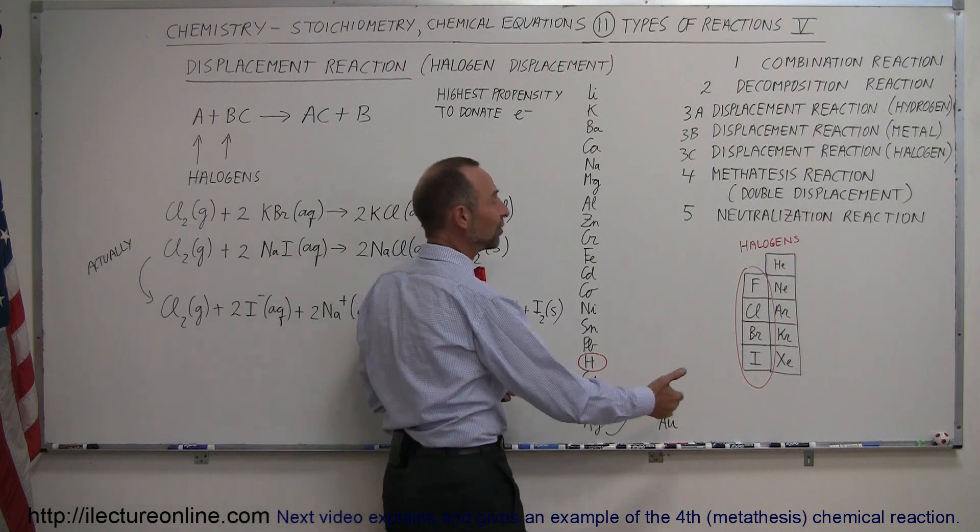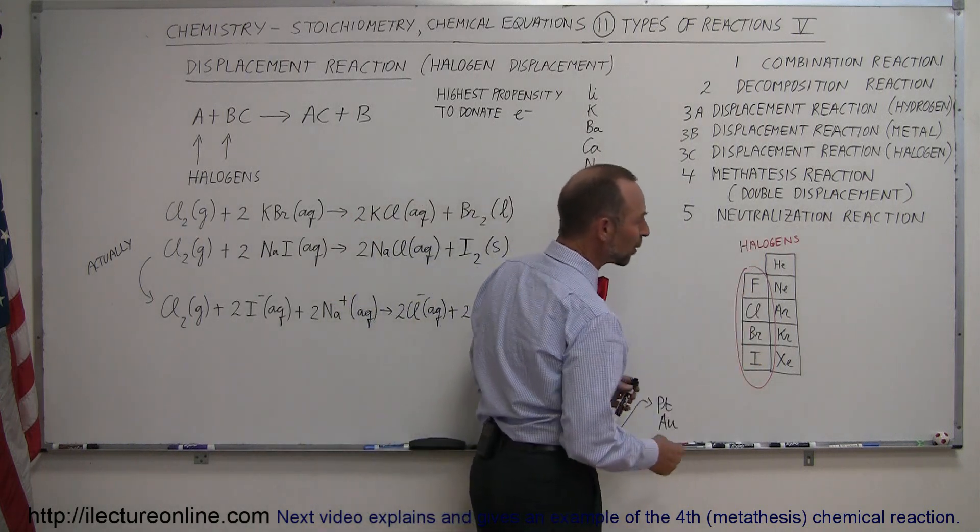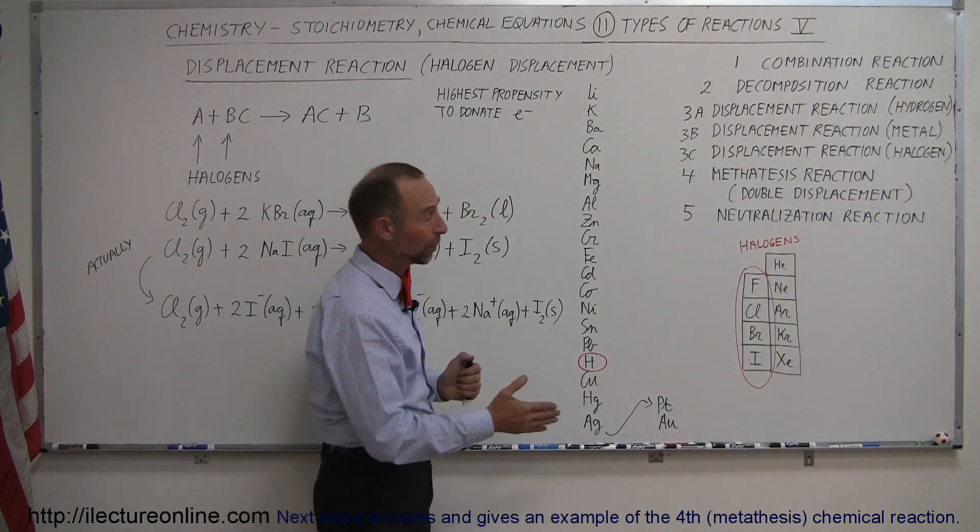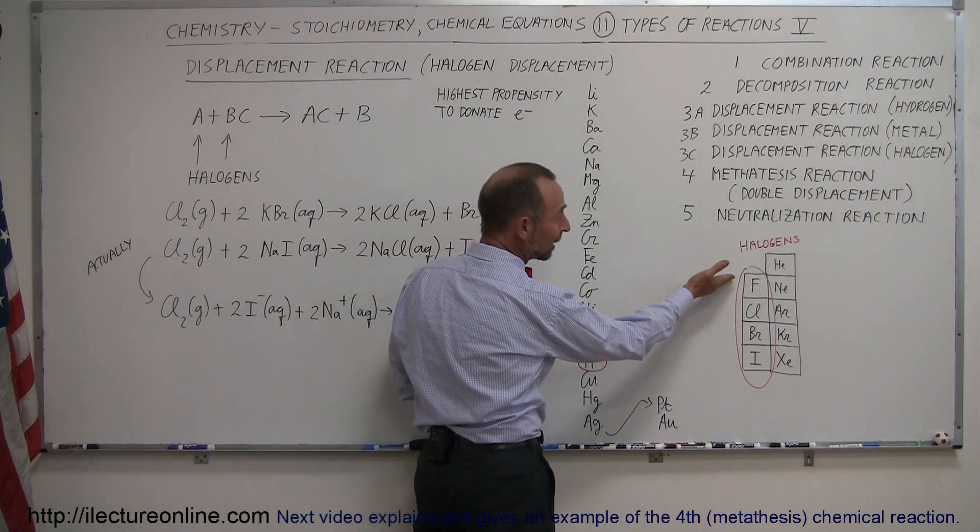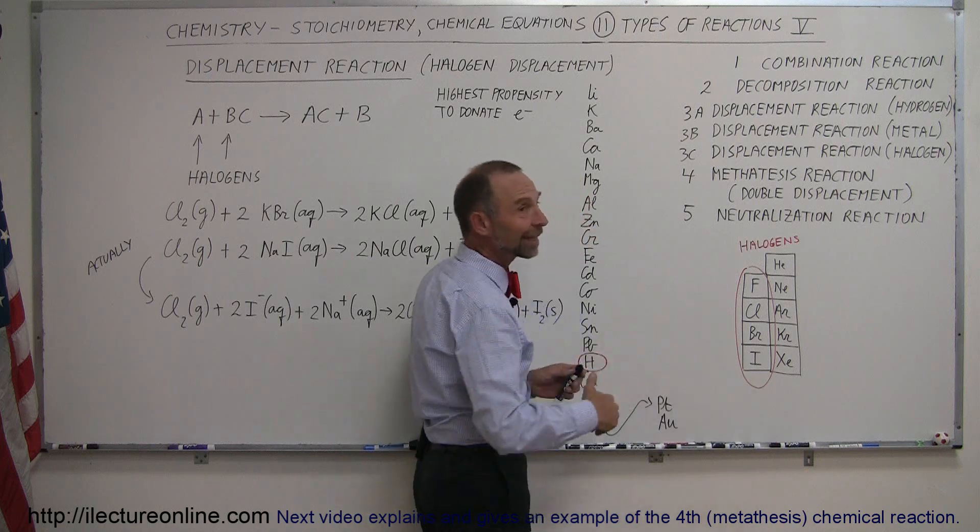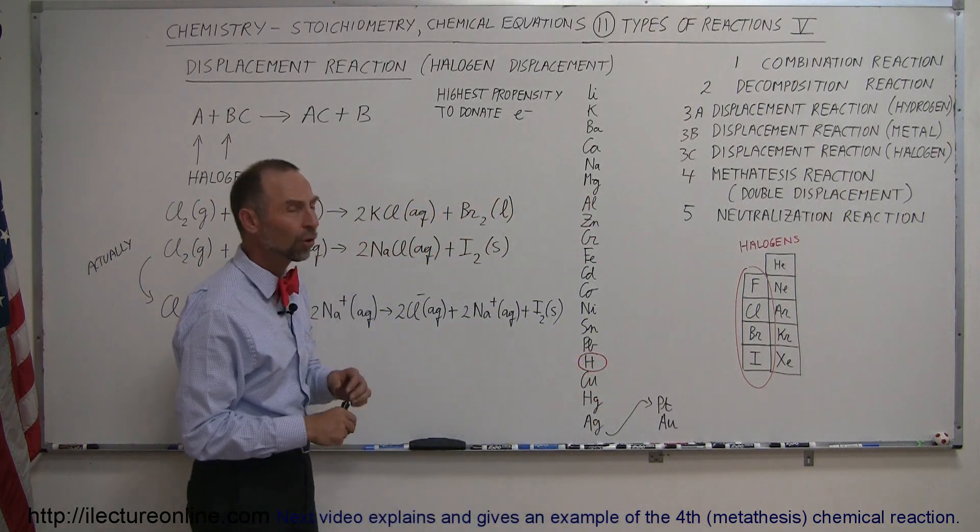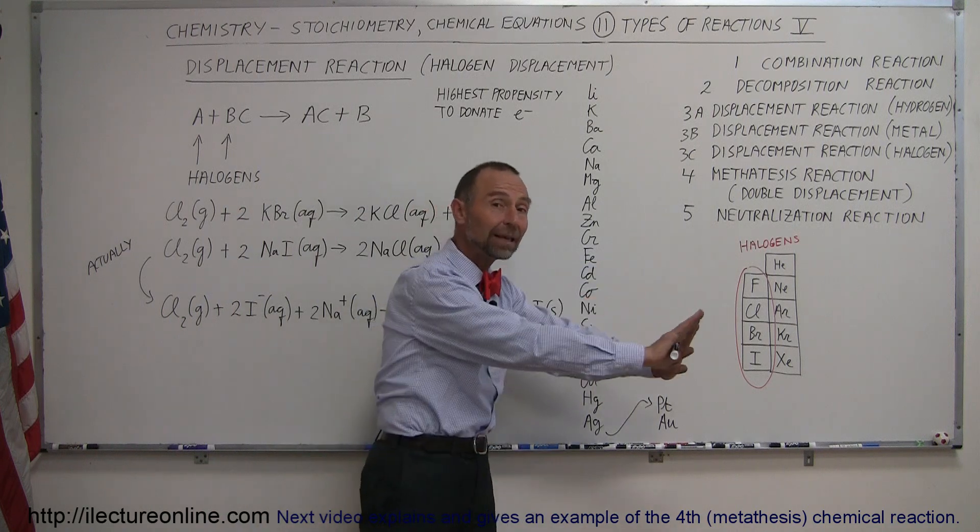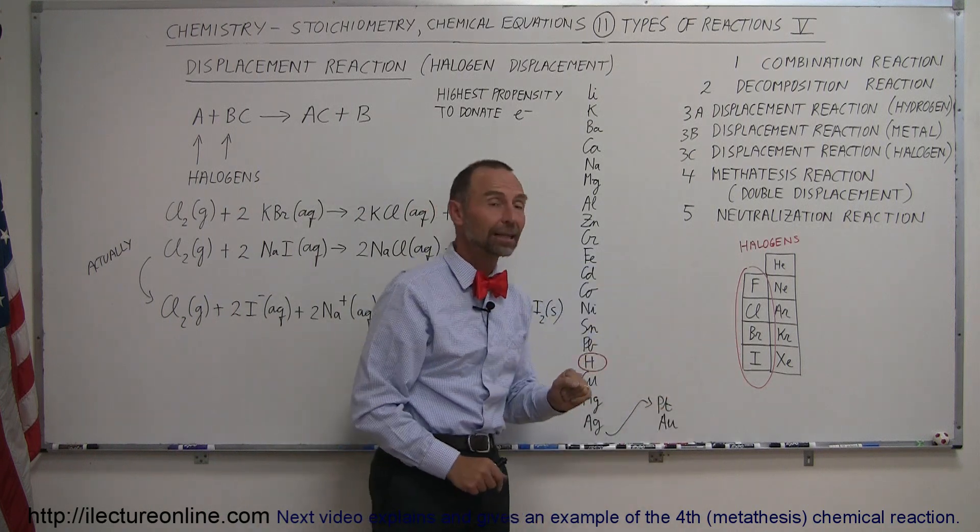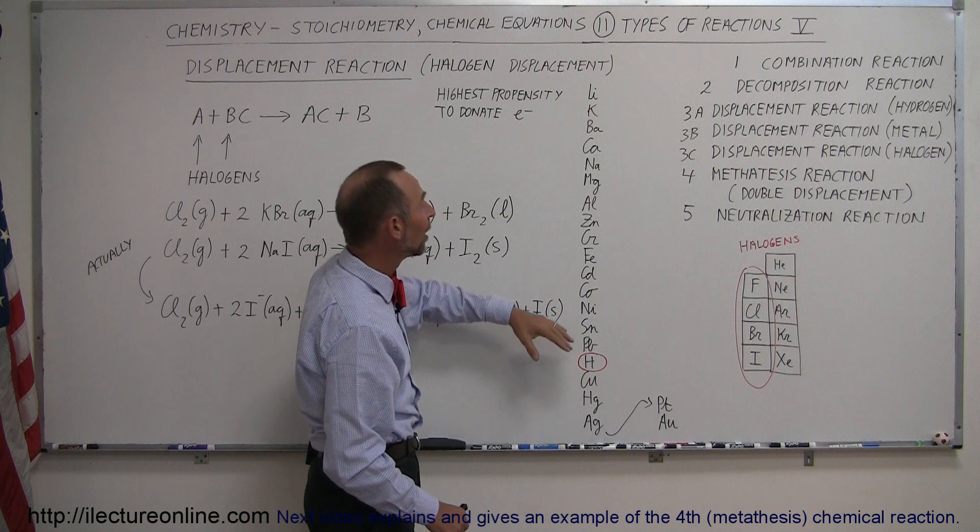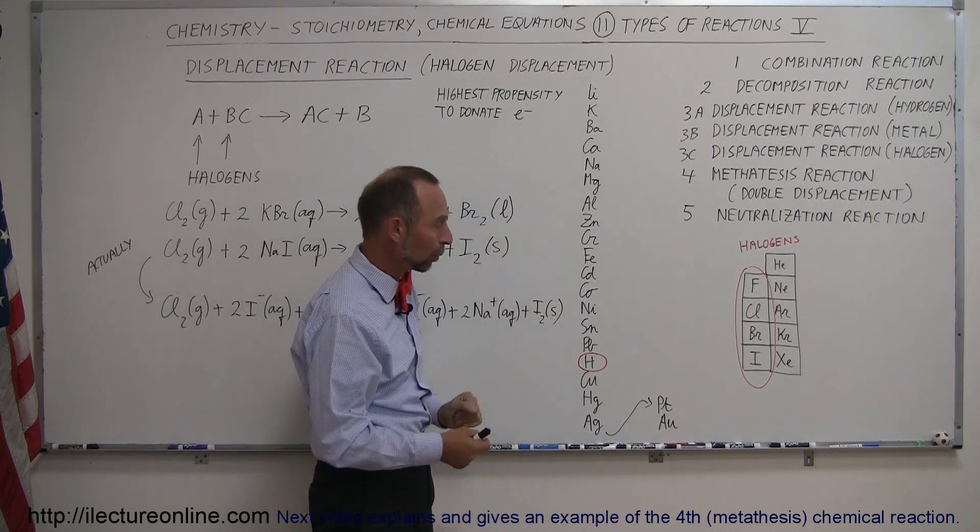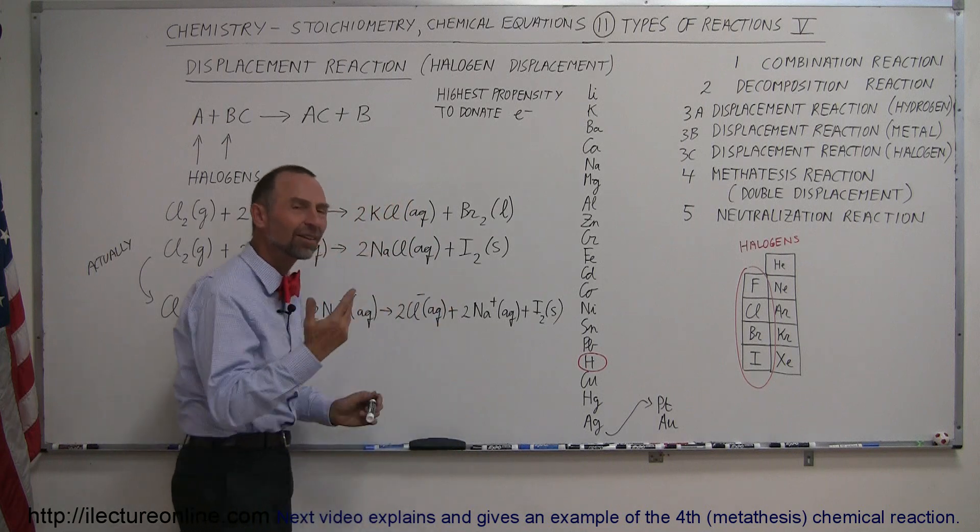The halogens are just to the left of the noble gases and have a high propensity for donating electrons. The ones on top are more likely to donate electrons than the ones at the bottom, which means that the ones higher up on the periodic table can displace the ones lower down. This is just like in the activity series where metals higher up are more likely to displace metals lower down.